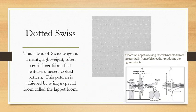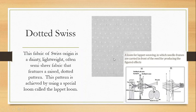Dotted Swiss is a fabric of Swiss origin — dainty and lightweight, often semi-sheer but available in opaque versions as well. It features a raised dotted pattern achieved by using a special loom called the lappet loom. The lappet loom is capable of almost embroidering small patterns on top of the fabric it weaves — that's how we get these little raised dots with texture to them.